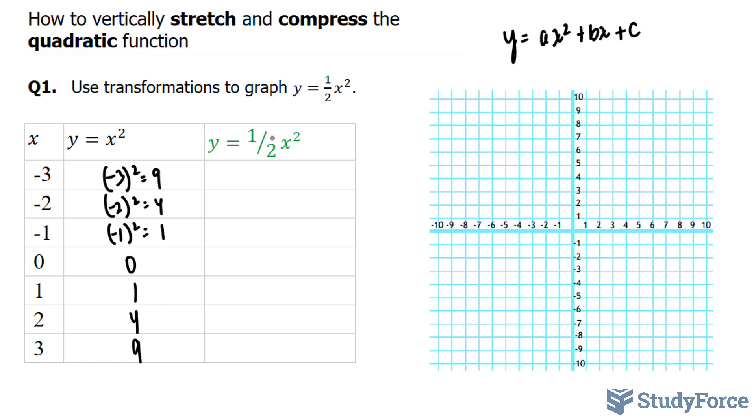Now, we'll see what happens when we put a half in front of the x squared. This time we have 9 divided by 2, 4 divided by 2, 1 divided by 2, 0 divided by 2, and similarly, 1 over 2, 4 over 2, and 9 over 2.